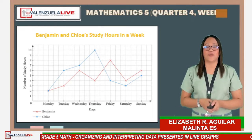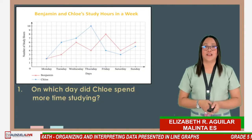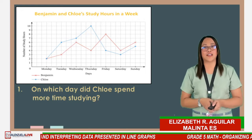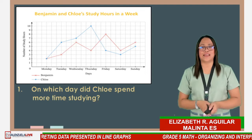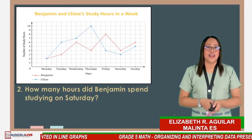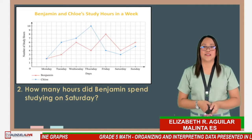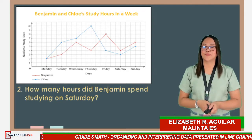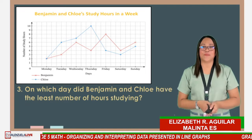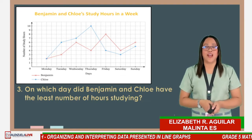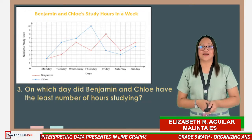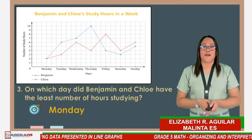Question 1: In which day did Chloe spend more time studying? It's on Thursday. Question 2: How many hours did Benjamin spend studying on Saturday? 4 hours. Question 3: On which day did Benjamin and Chloe have the least number of hours studying? It's on Monday — they each spent 2 hours.